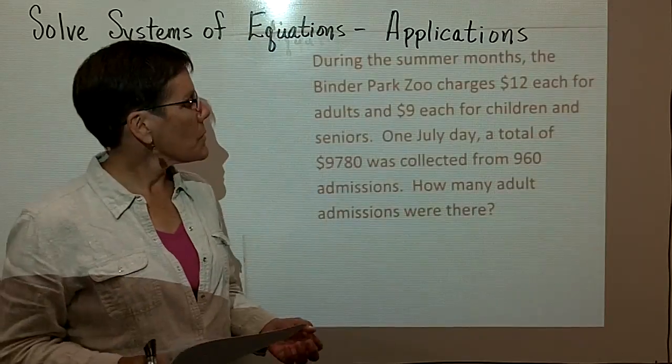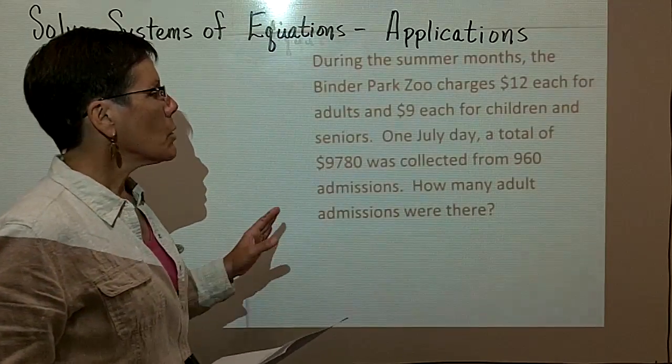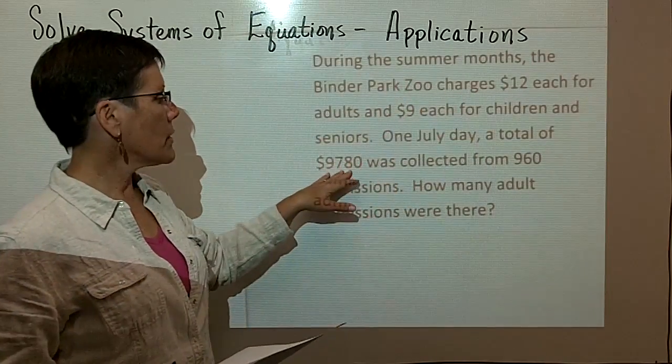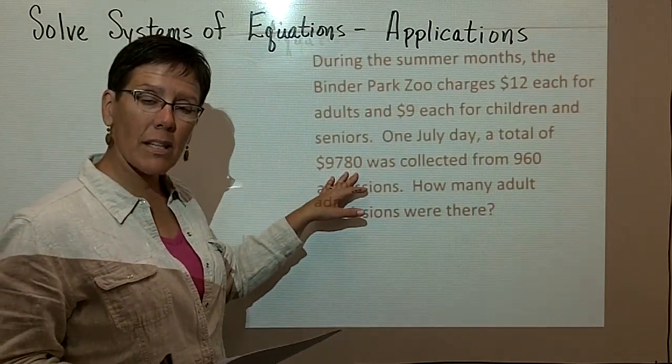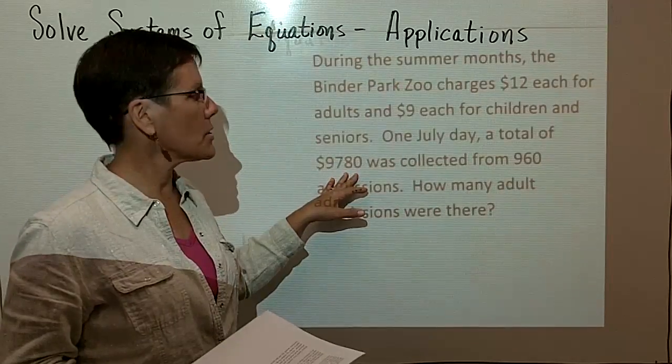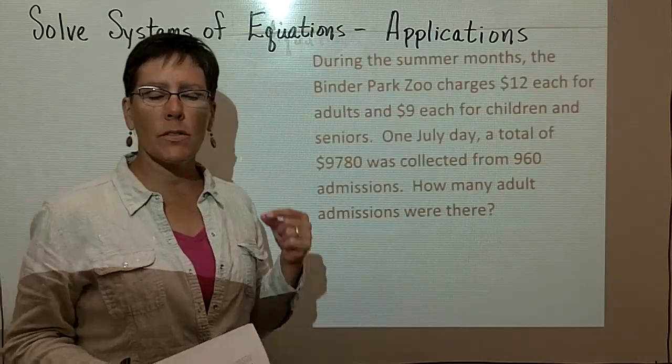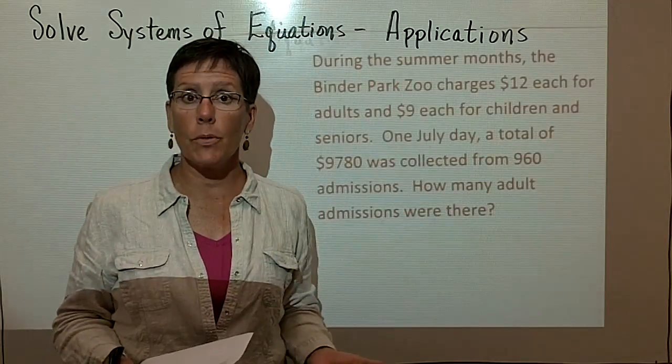What I'd like you to notice is that in this particular problem, we talk about the value or the cost that we charge people. And this is the dollar amount that was collected because of those charges. This number right here, the 960 admissions, is the number of people who came through the door.